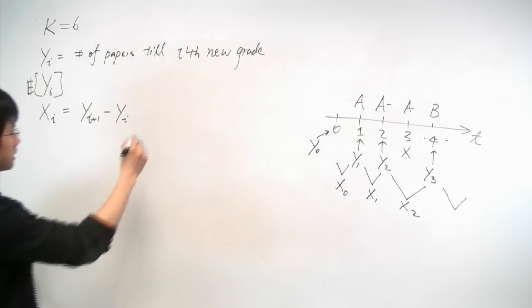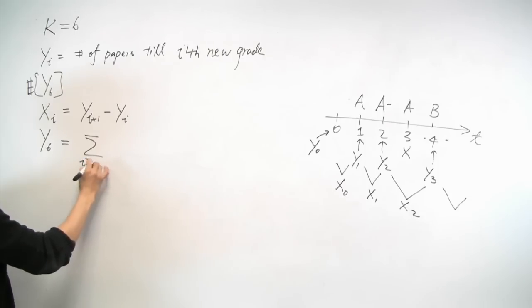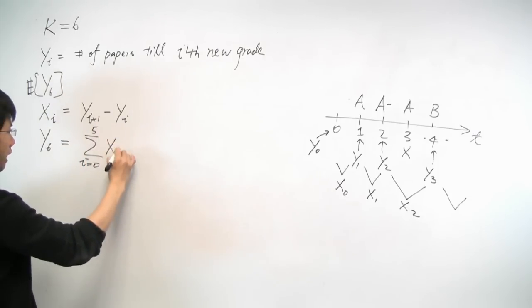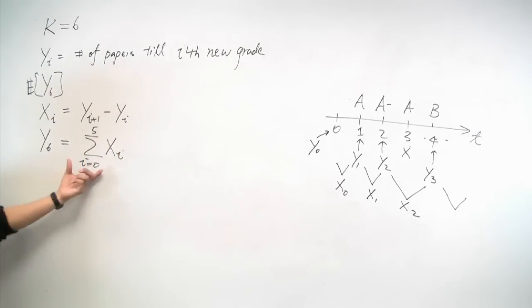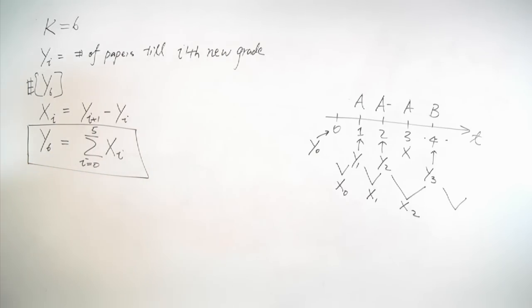Through this notation, we see that y6 now can be written as the summation of i equal to 0 to 5 xi. So all I did was to break down y6 into a sequence of summations of the differences like y6 minus y5, y5 minus y4, and so on. And it turns out this expression will be very useful.